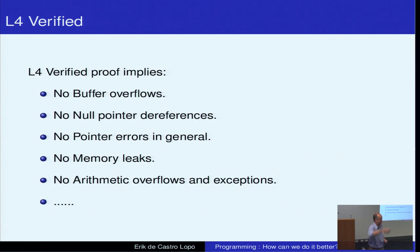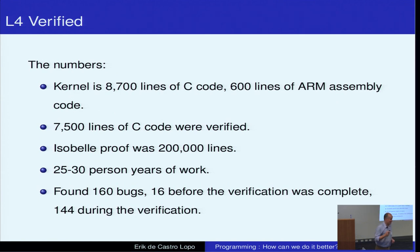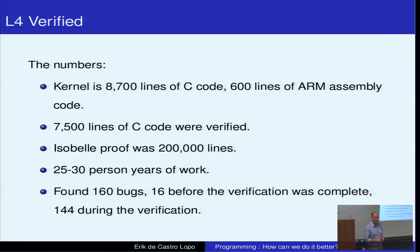The L4 verification proved a couple of things: no buffer overflows, no null pointer dereferences, and no pointer errors — though this is an incomplete list; it proved very much more. The actual kernel is 8,700 lines of C code and 600 lines of ARM assembler. The stuff that was verified was 7,500 lines of C. The ARM assembler wasn't verified and the part not verified in C is basically the bootloader. The Isabelle proof is 200,000 lines of code — 200,000 lines to prove 7,500 lines of code.